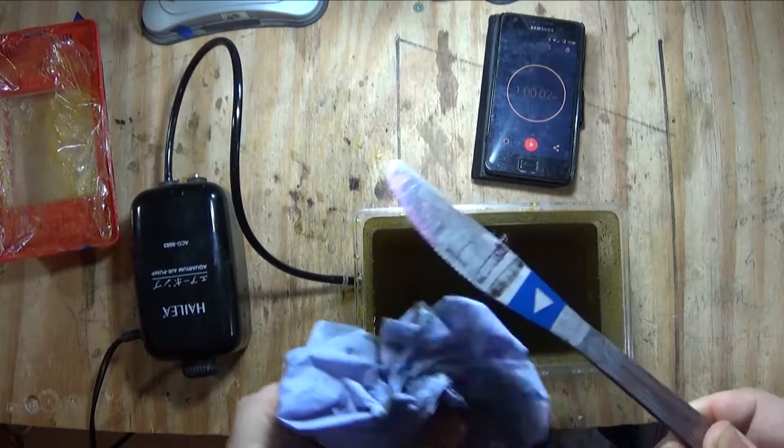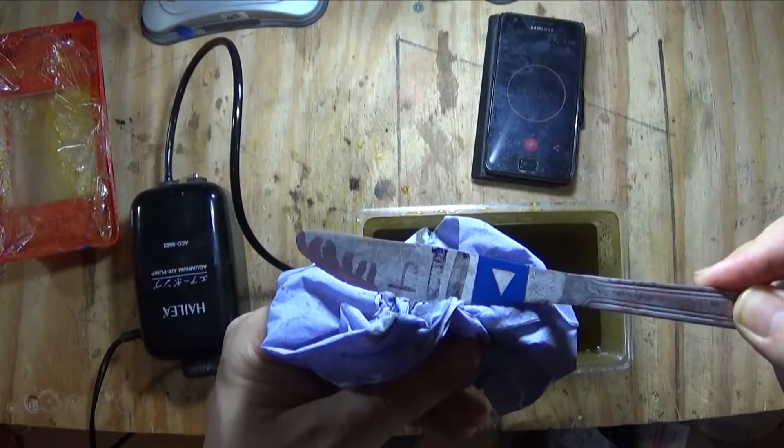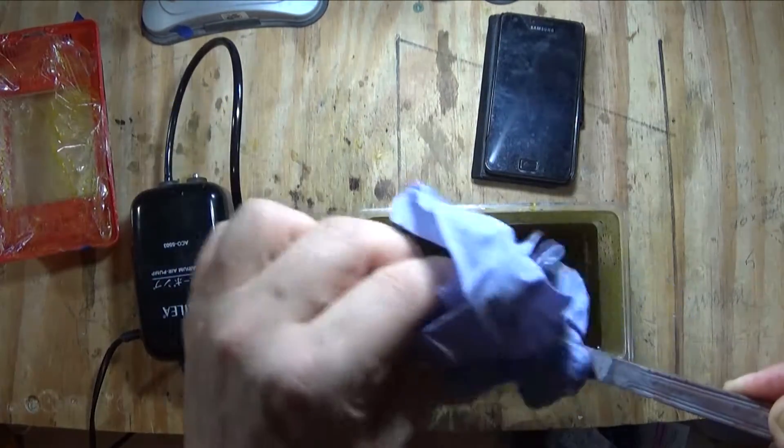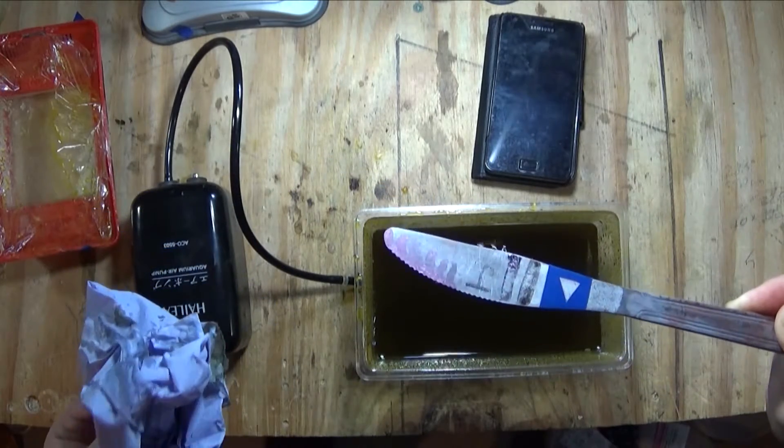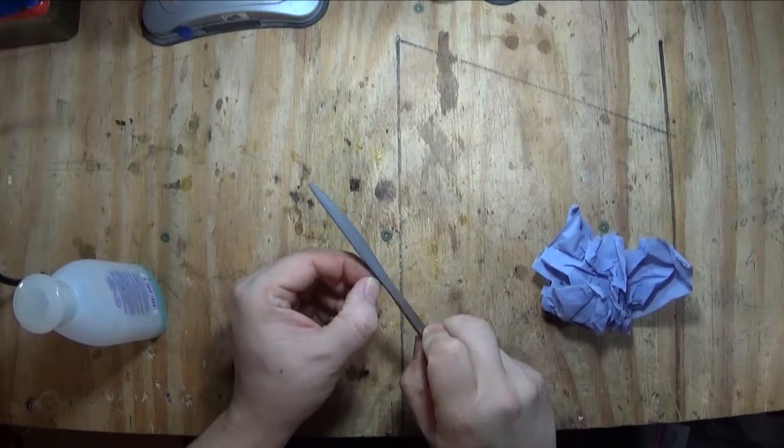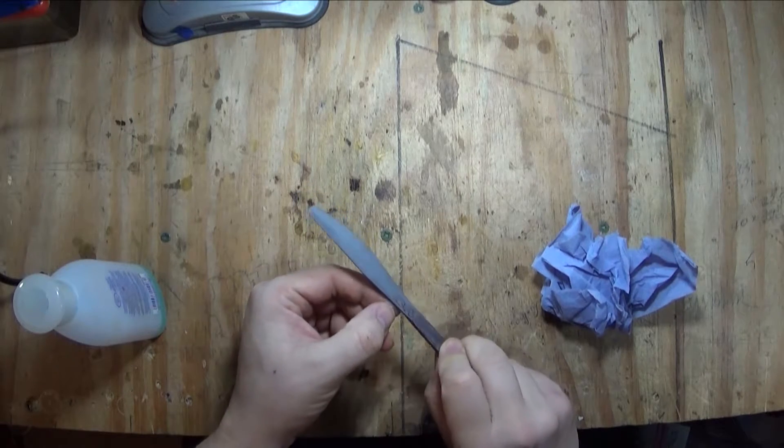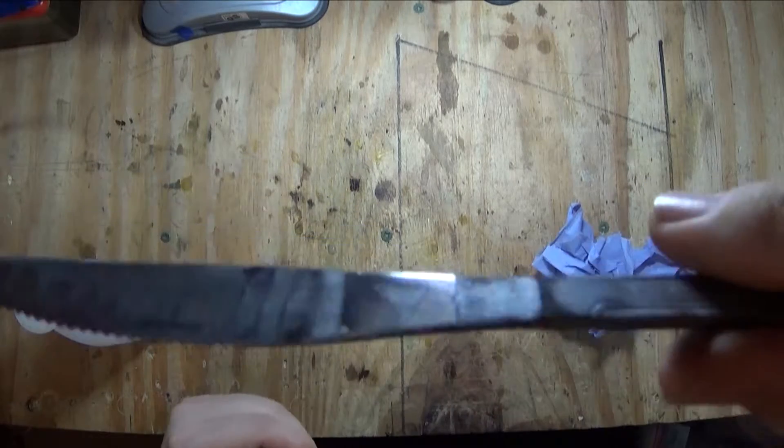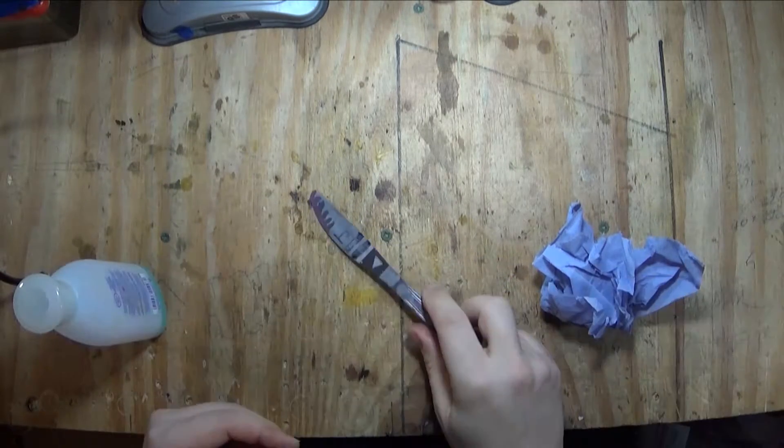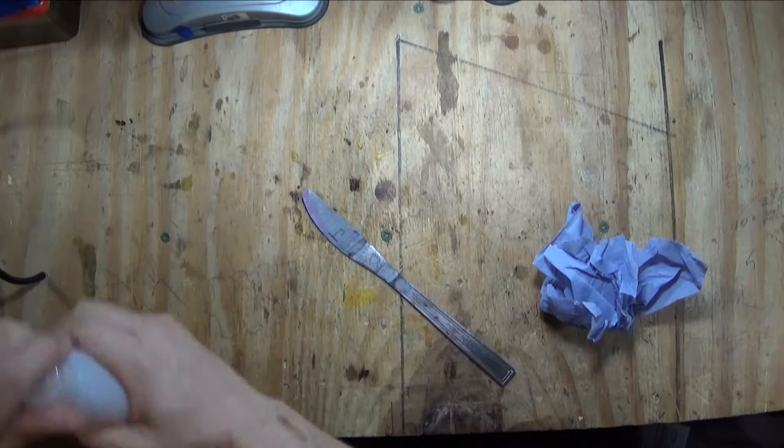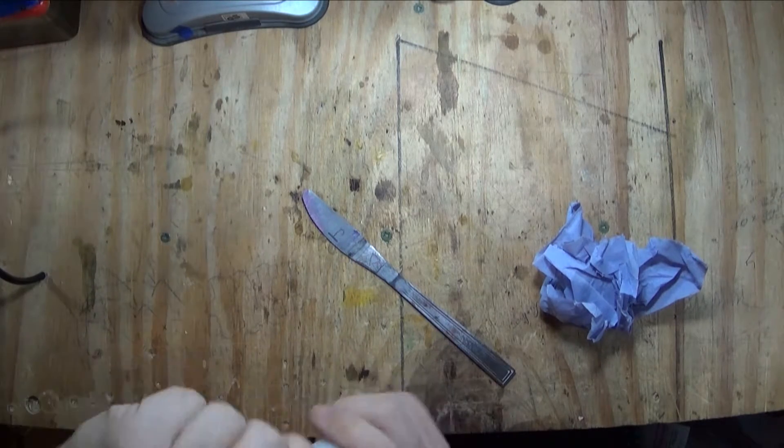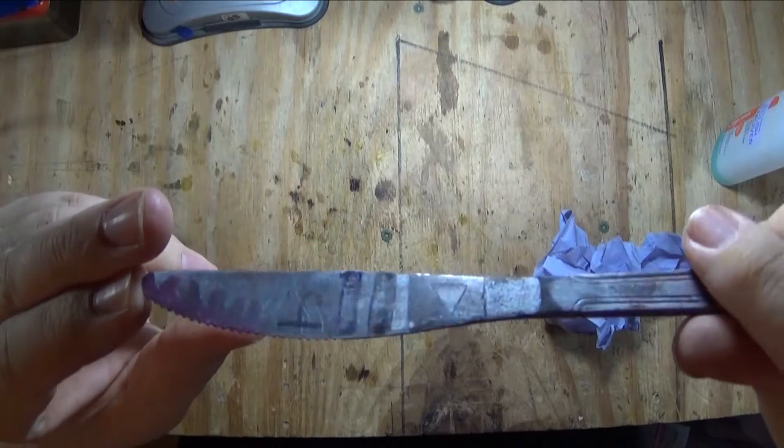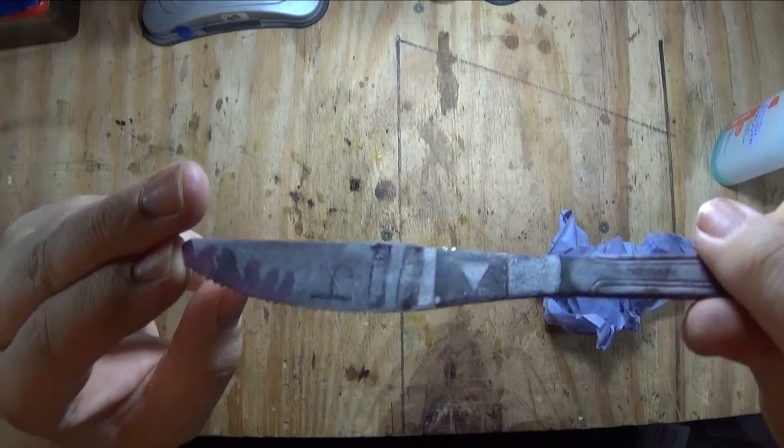We'll see how deep it's etched but I can already tell it's nowhere near as good as the electrolytic etching and it's nowhere near as deep or as quick so I'll clean that off and be back. One thing I can already tell is the marker pen stayed on a lot better with that process than the electrolytic.